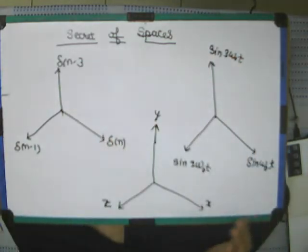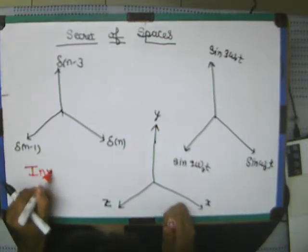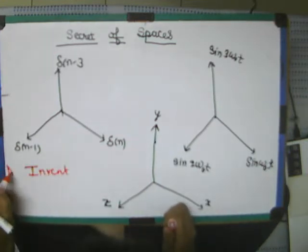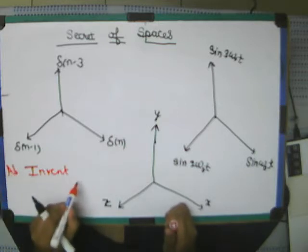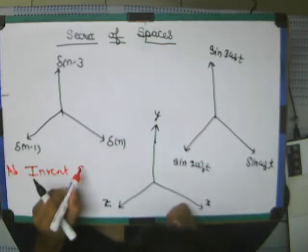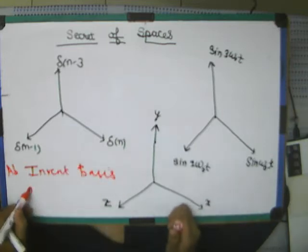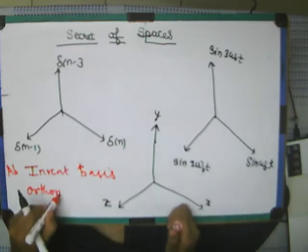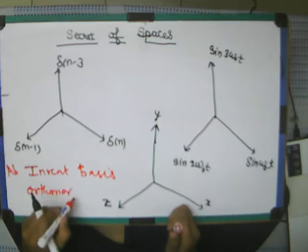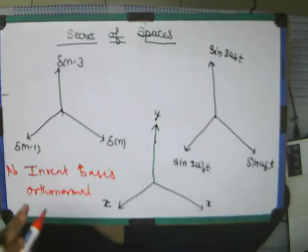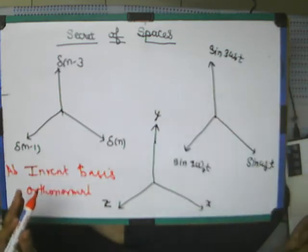So, if you are able to invent, if you are able to invent to invent the space, this vector, this basis, in such a way that they are orthonormal or orthogonal. If you are able to invent orthonormal basis, then we have demystified the secret of spaces.